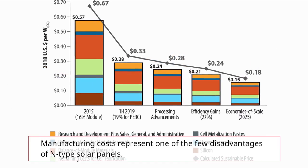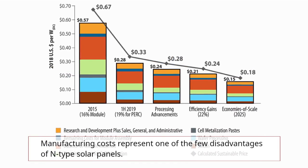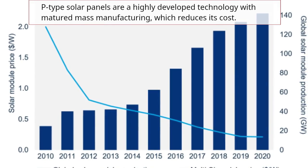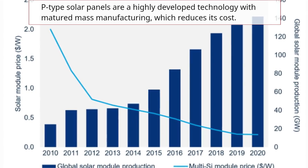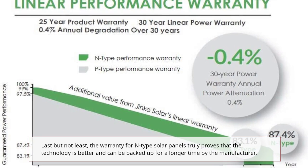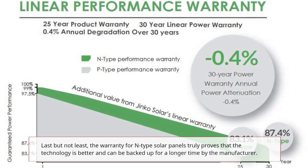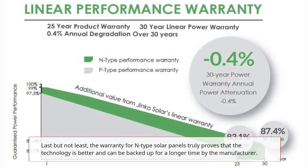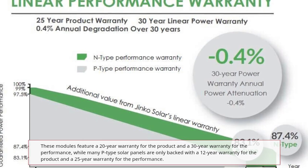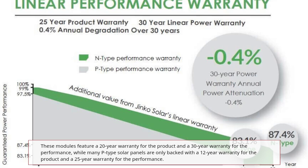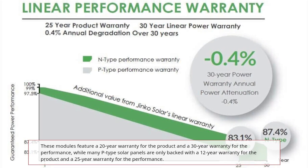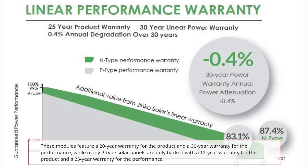Manufacturing costs represent one of the few disadvantages of N-type solar panels. P-type solar panels are a highly developed technology with matured mass manufacturing, which reduces their cost. Last but not least, the warranty for N-type solar panels truly proves that the technology is better and can be backed up for a longer time by the manufacturer. These modules feature a 20-year product warranty and a 30-year performance warranty, while many P-type solar panels are only backed with a 12-year product warranty and a 25-year performance warranty.